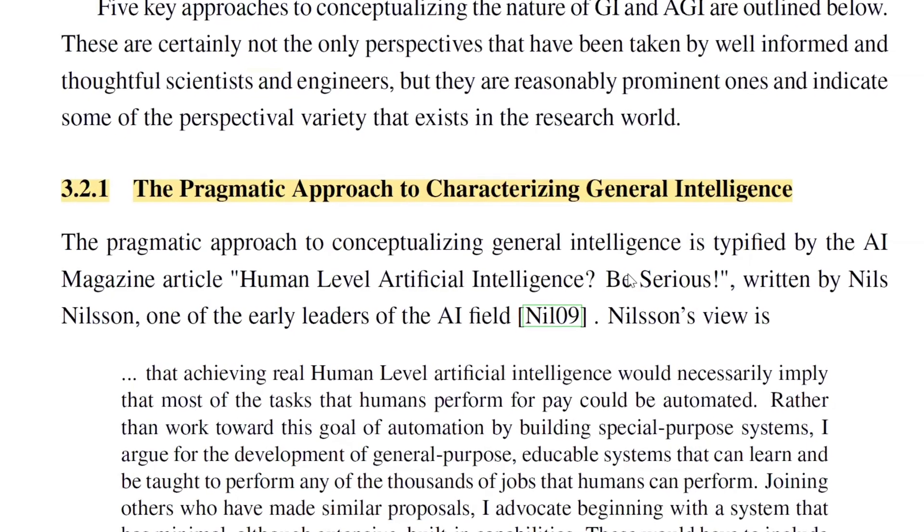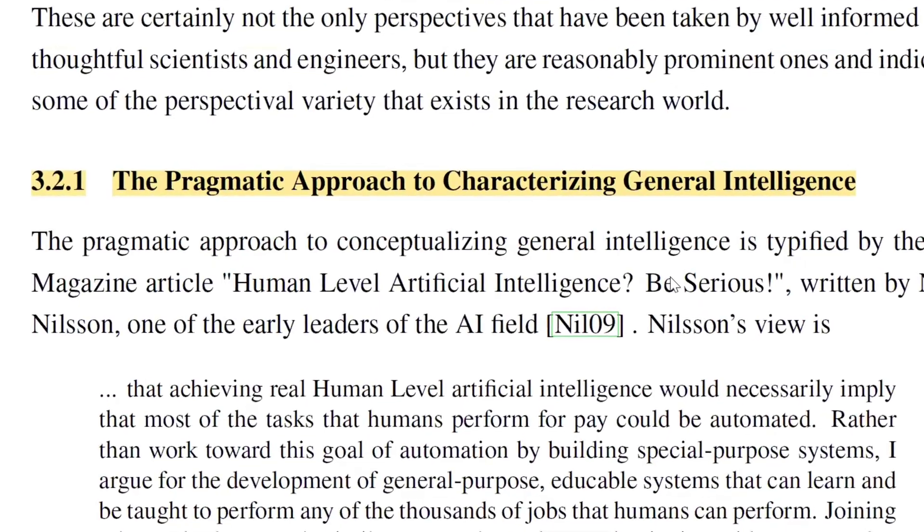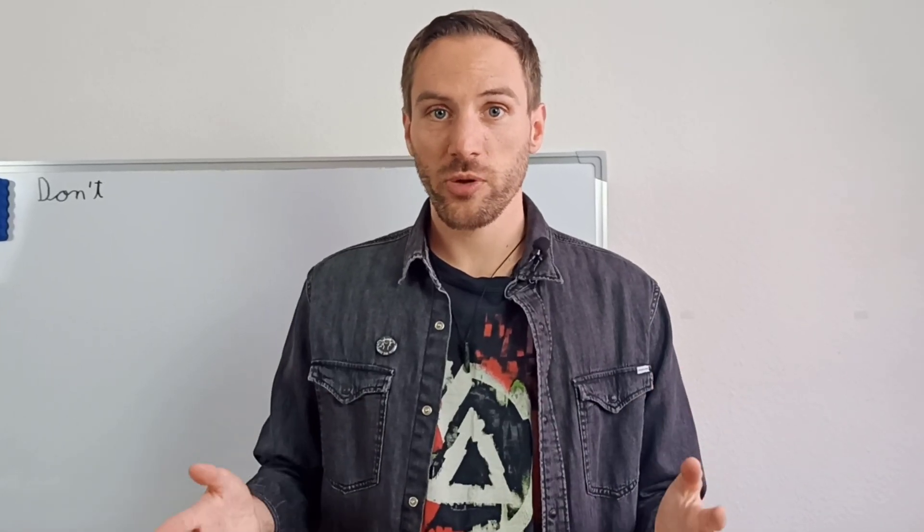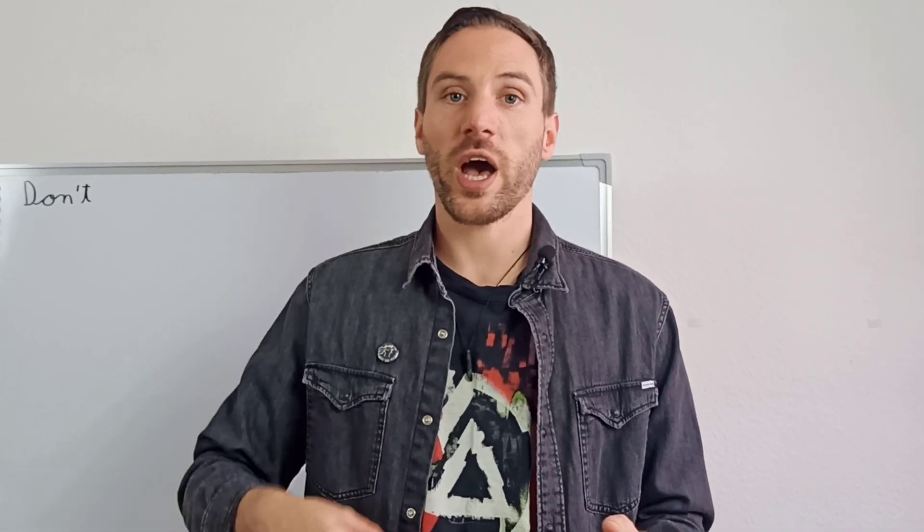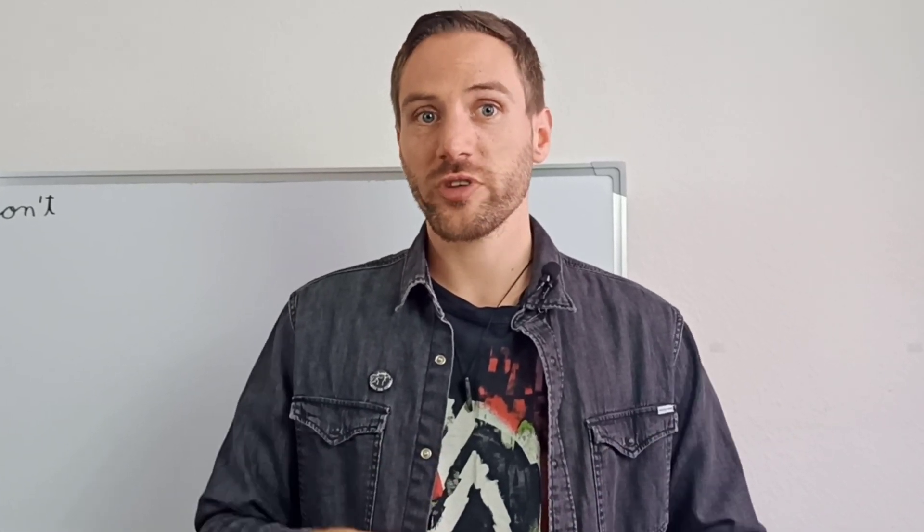Let's talk with one another and discuss things in a meaningful way. Now let's get started with the pragmatic approach to characterizing general intelligence. This approach basically argues that a system should be seen as artificial general intelligence when it can do all jobs that humans can do on the same level that humans could do them.